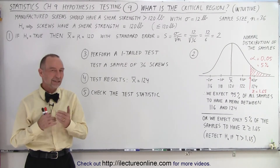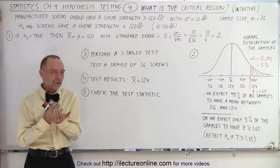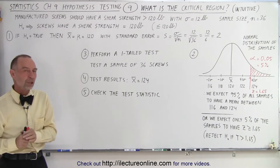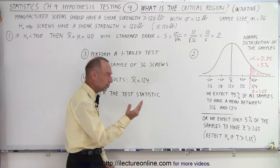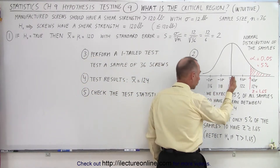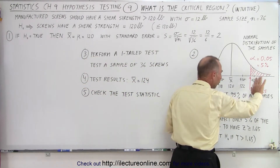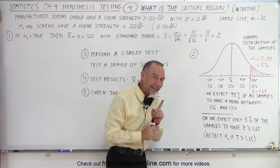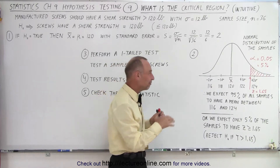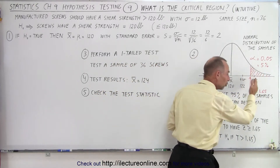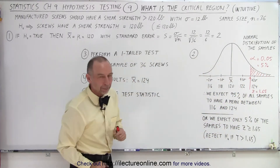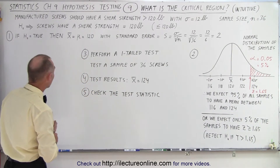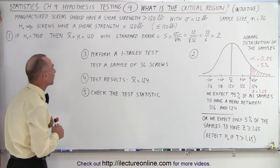Welcome to our Lecture Online. In this video, we're going to try to give you that intuitive feeling of what we mean by the critical region. The critical region was a small region to the left or to the right or on both sides of a distribution of a population, such that if the test statistic falls within that critical region, you would reject a null hypothesis. But what does that even mean? So let's use an example to get that intuitive feeling.